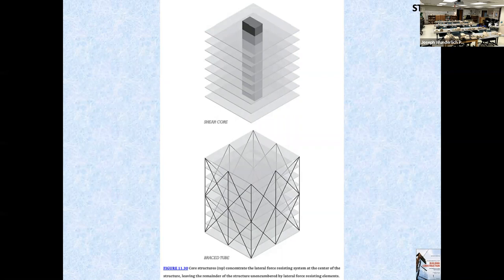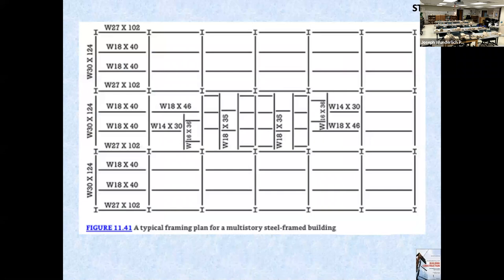Here is a shear core versus a braced tube — the overall structural shape. You have a central core carrying the main load, which is a common approach in high-rises, or a braced tube. Here is a typical framing plan for the steel erectors, showing wide flange columns and wide flange beams with columns spaced at intersections.